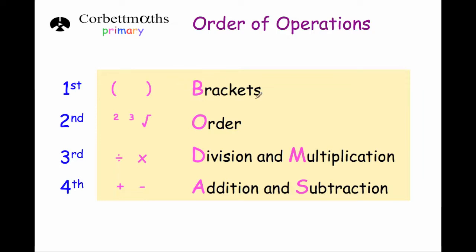First of all in a calculation you work out any brackets, then any orders which might be squares or cubes or square roots, then any divisions and multiplications, and finally any additions or subtractions. So that's the correct order of operations: brackets, orders, divisions and multiplications, additions and subtractions. Some people call this BODMAS — B-O-D-M-A-S.